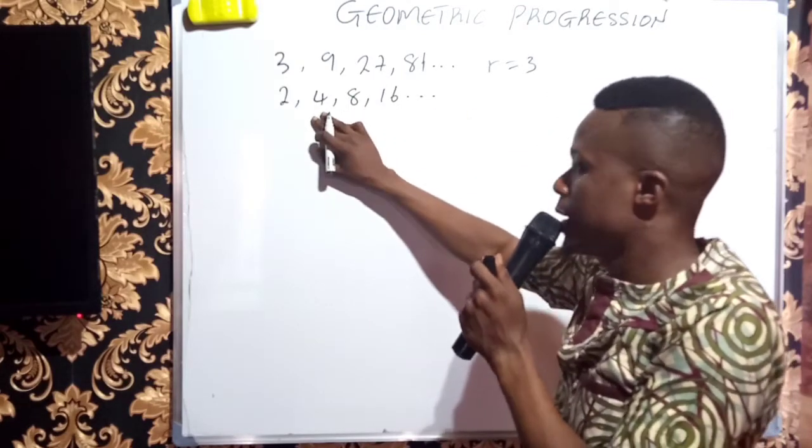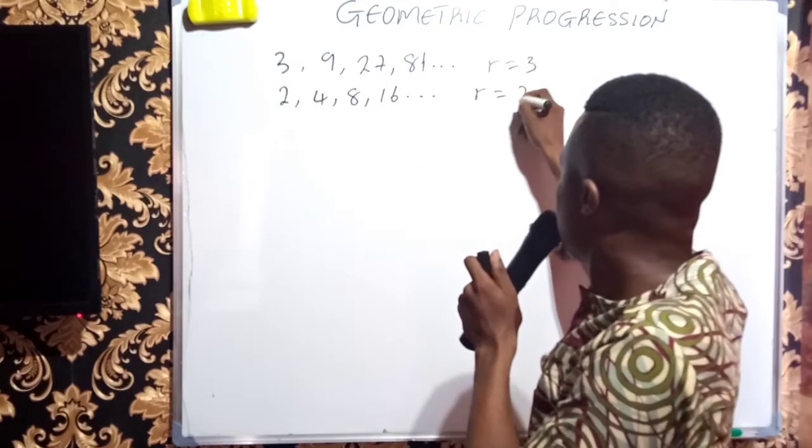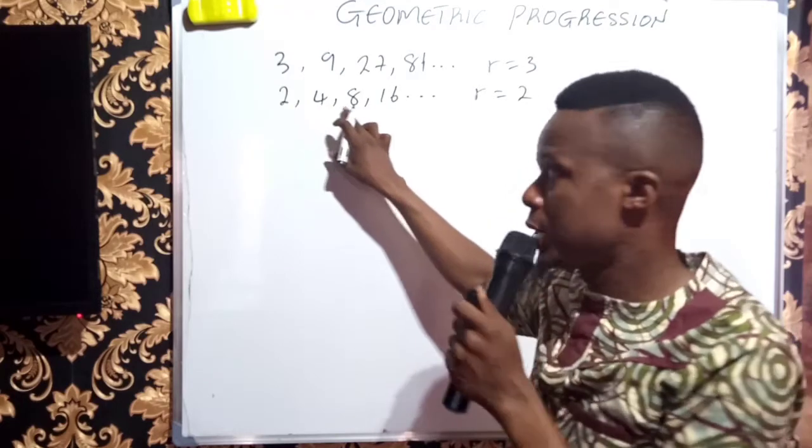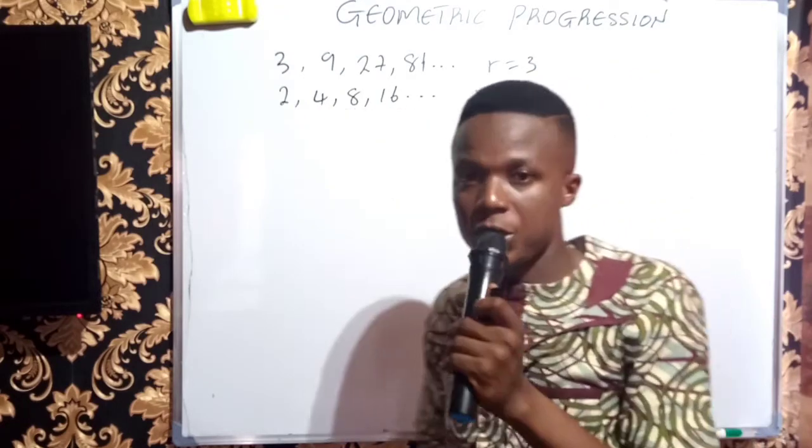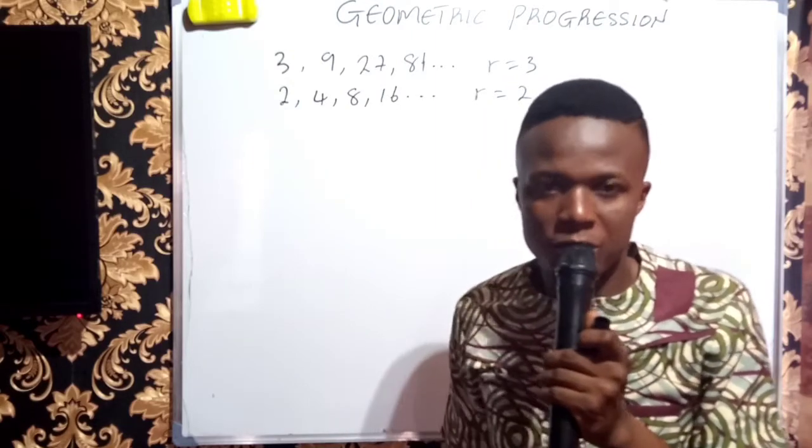Also here, every other term is obtained by multiplication of 2. So the common ratio here is 2 because 2 times 2 is 4, 4 times 2 is 8, 8 times 2 is 16, etc. But if it is arithmetic progression, it is just addition of a constant term.